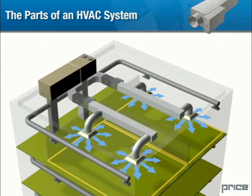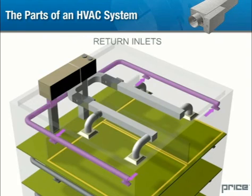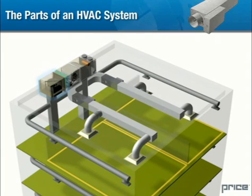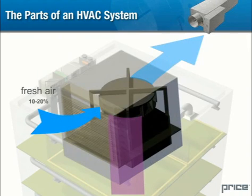Once air enters a space, where does it go? Air circulates through the return inlets and returns to the air handling unit. Unlike an air outlet, a return requires no sophisticated vanes. However, the relative location of the air inlets and outlets can be critical to the efficiency of the system. Upon returning to the air handler, a certain portion of the return air is exhausted and replaced with fresh exterior air — in an average office building or commercial space, approximately 10 to 20%.